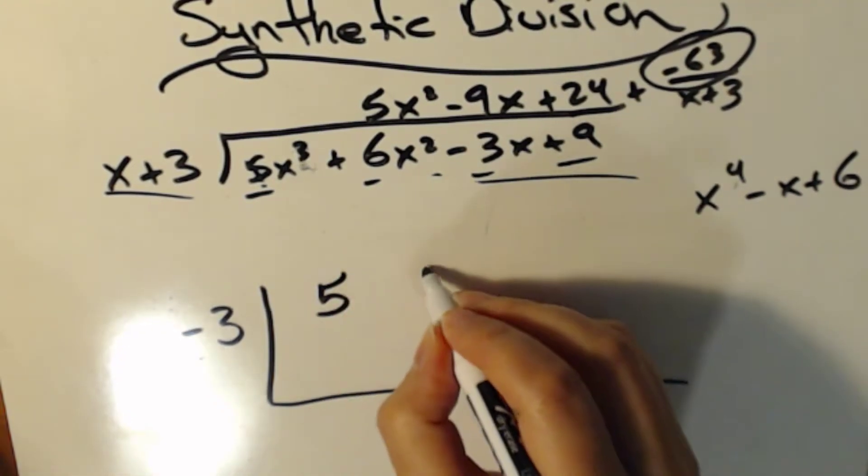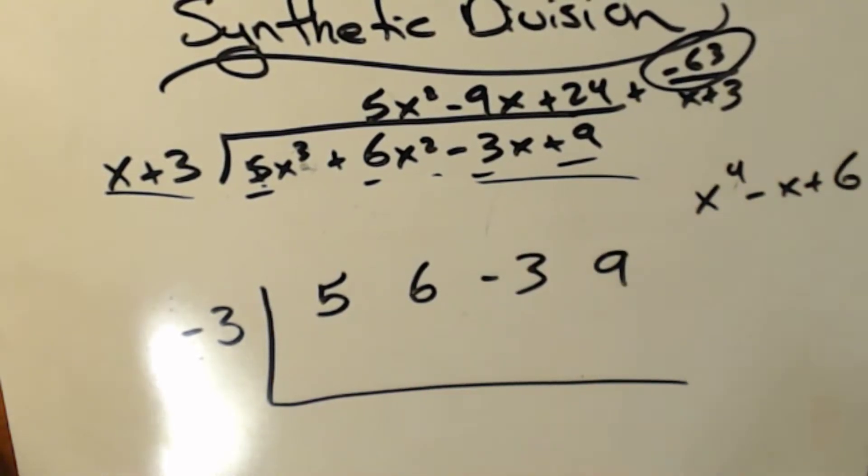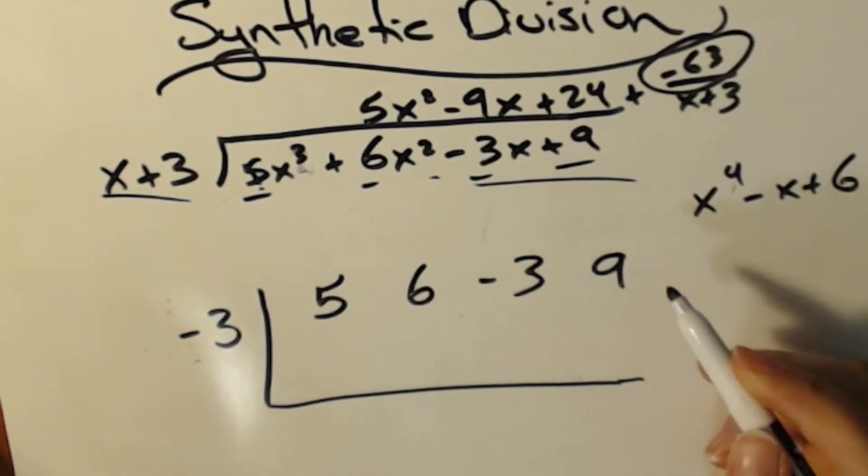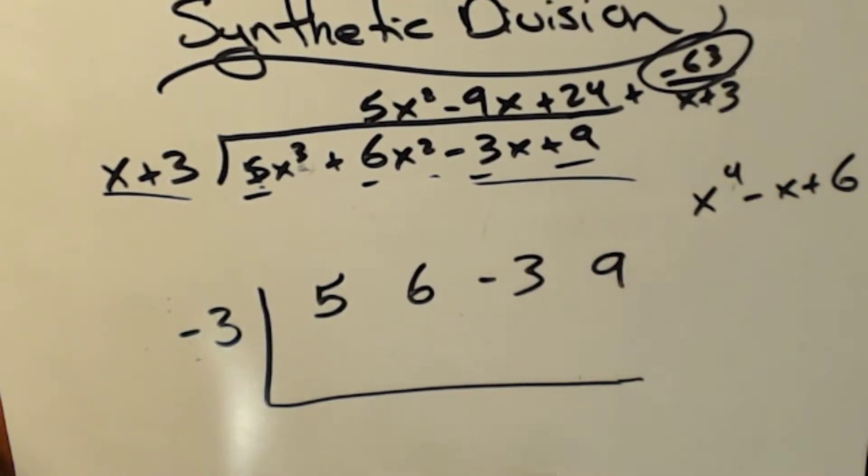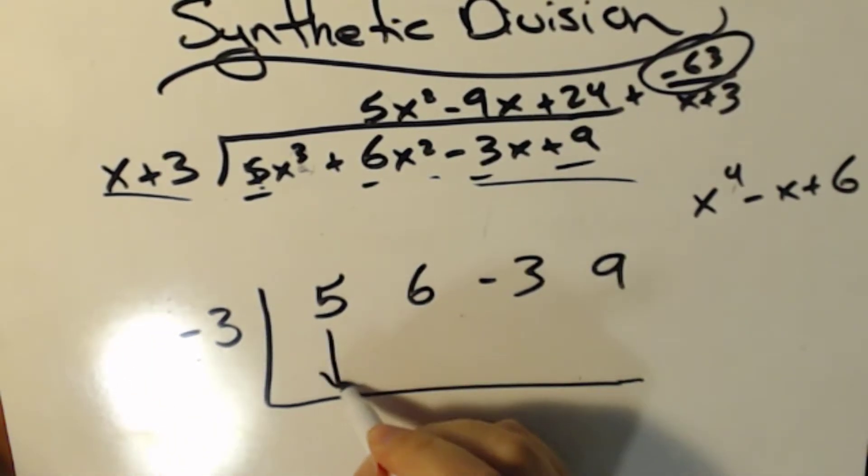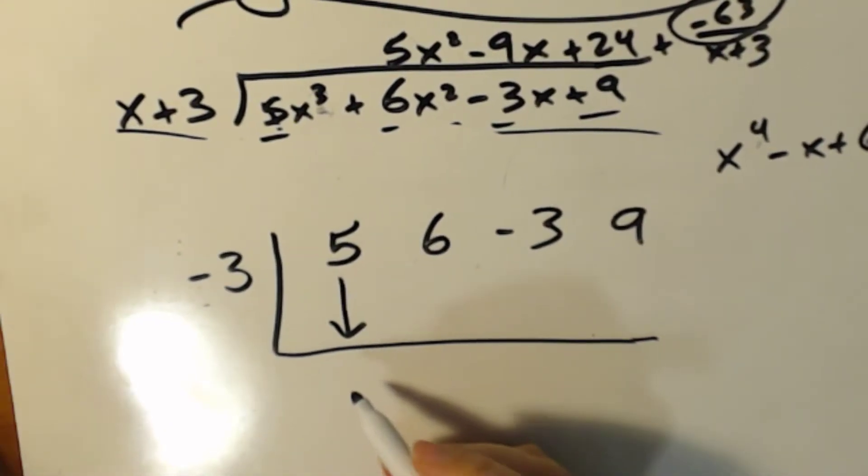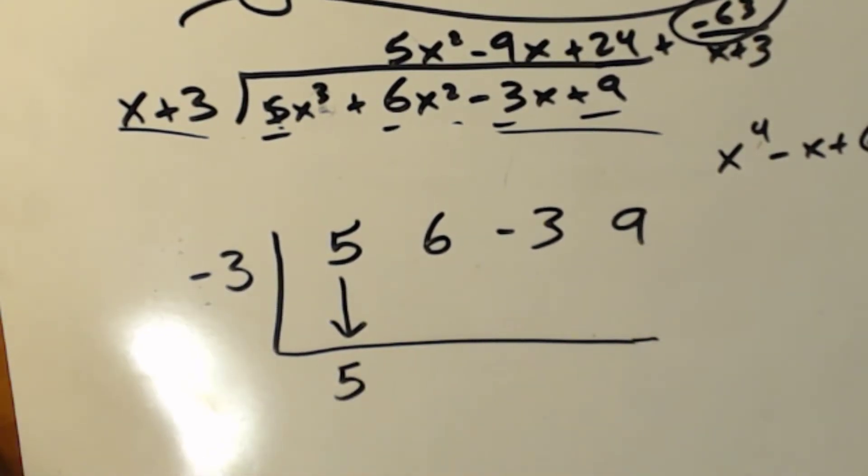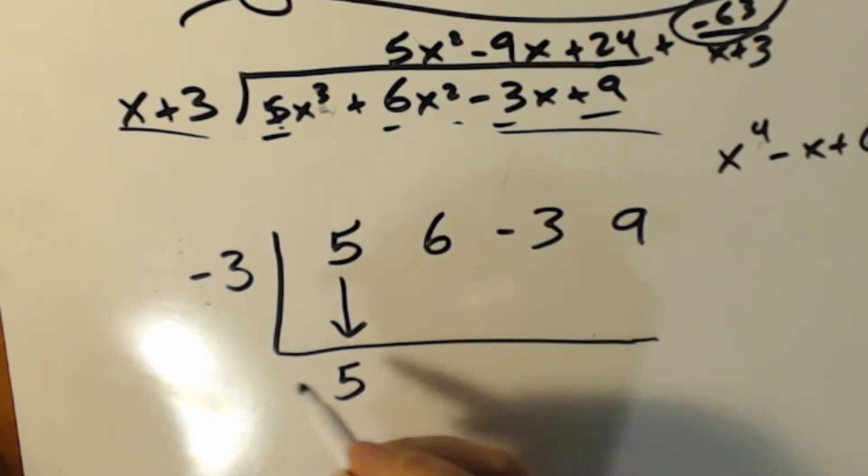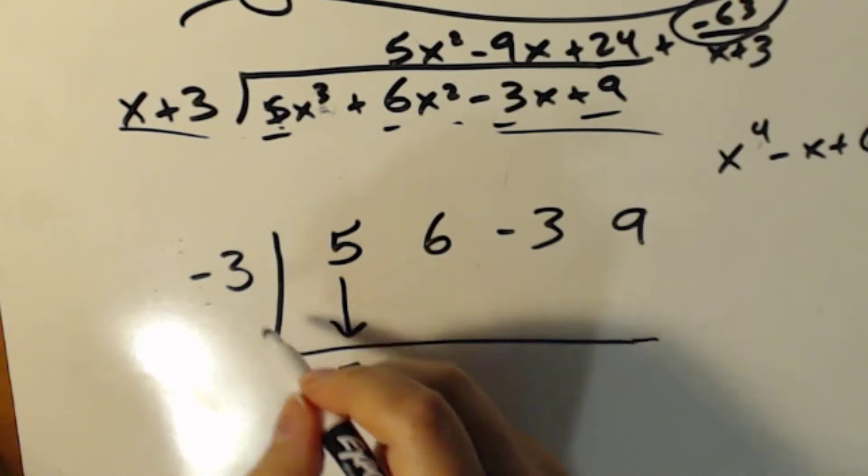So I'm going to write 5, 6, negative 3, 9. And all I need to write is the coefficients. I don't need to worry about the x's at all at this point. All I need is numbers. So then what I'm going to do is my first number, I'm just going to bring straight down, and I'm going to put it right here. So just bring it down, rewrite it.